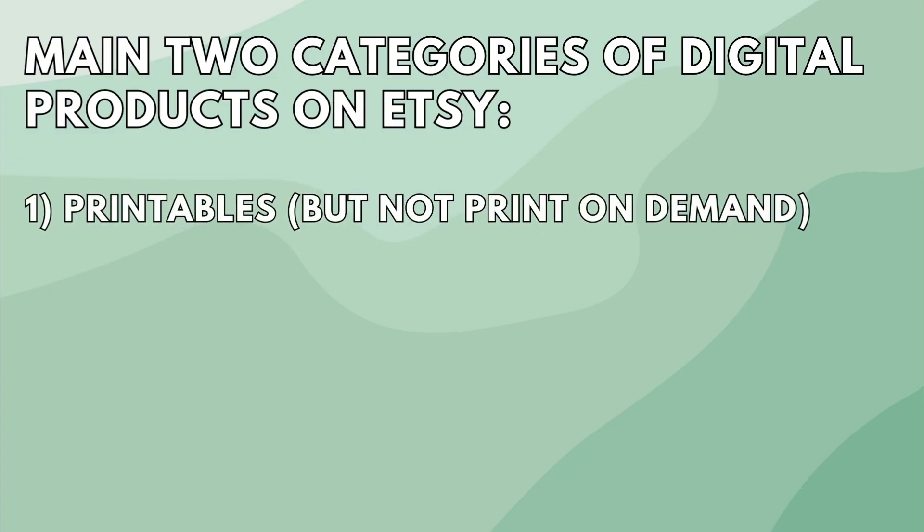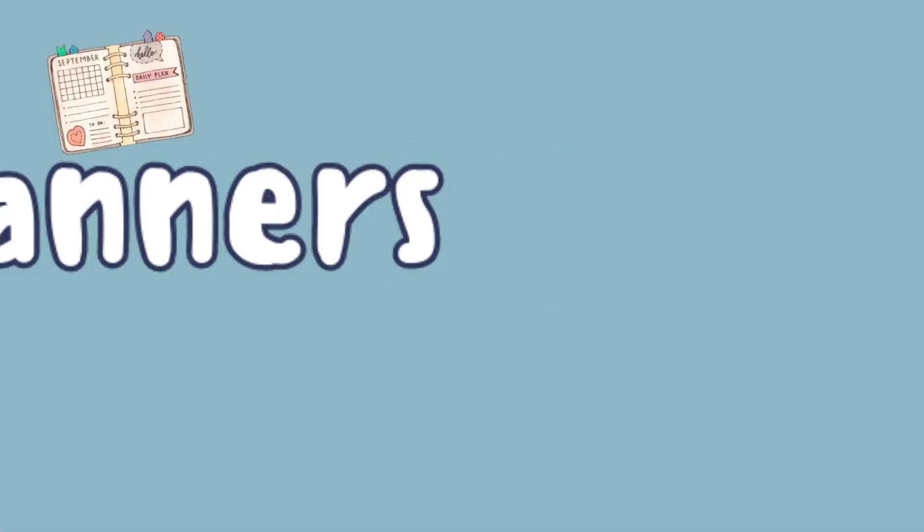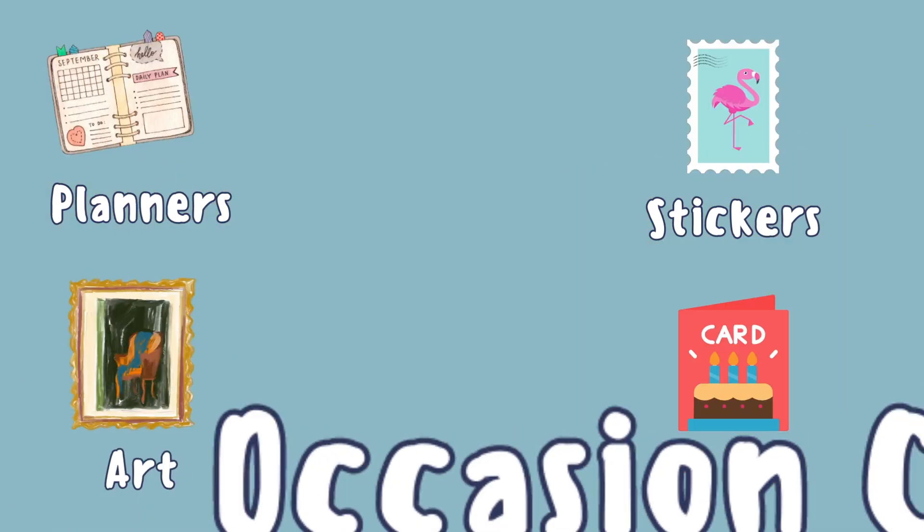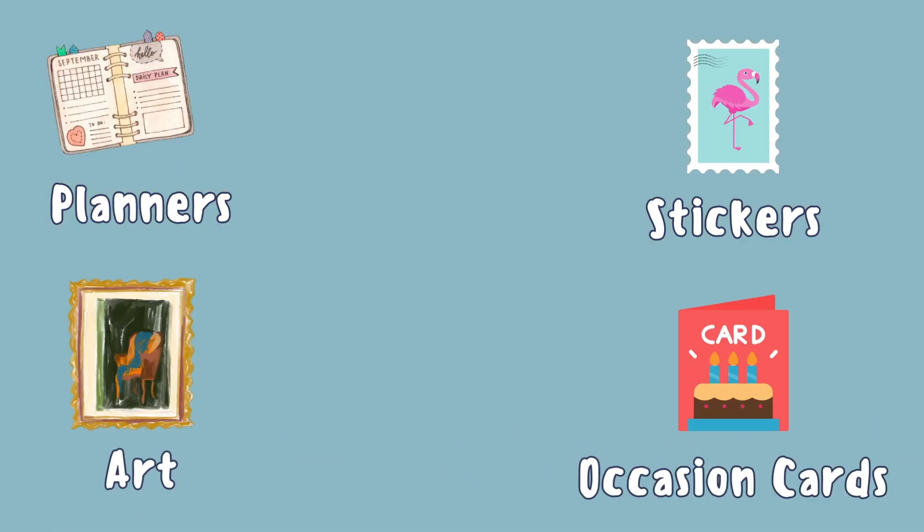There are normally two different categories of digital items that I see a lot of people selling on Etsy. The first is printable items — not to be confused with print on demand items. These printable items are products that you sell to customers for the customers to then print out at home. Some popular examples include printable planners, art, stickers, and even occasion cards for birthdays or weddings.